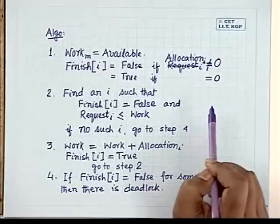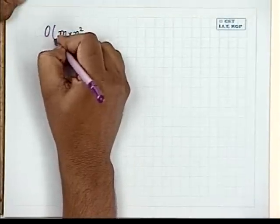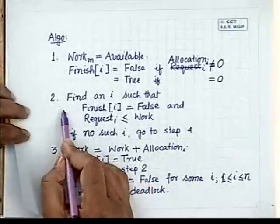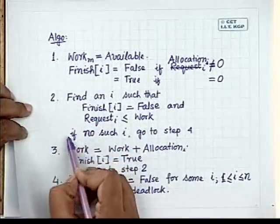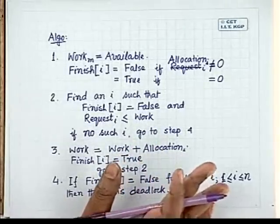Analyzing the deadlock detection algorithm and Banker's algorithm for deadlock avoidance, both have time complexity of order O(m × n²). This is because finding an i satisfying the conditions in step 2 takes O(n²) time, and since each vector is of dimension m, the total complexity is O(m × n²).